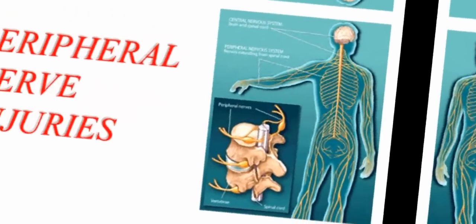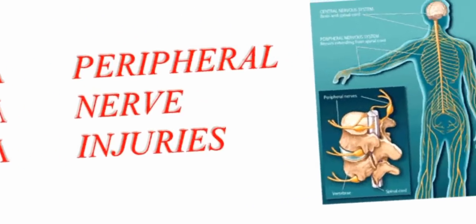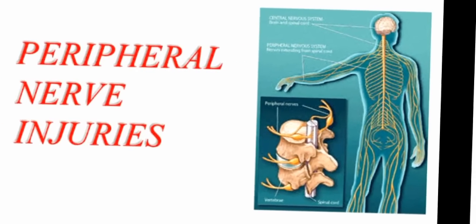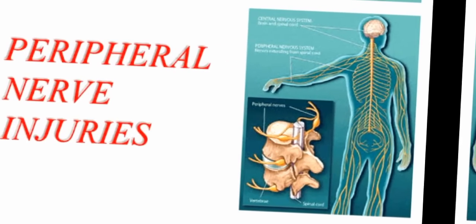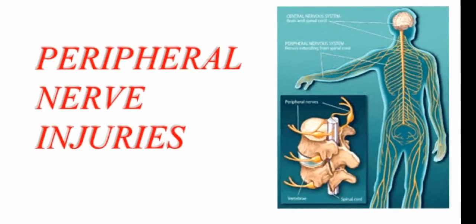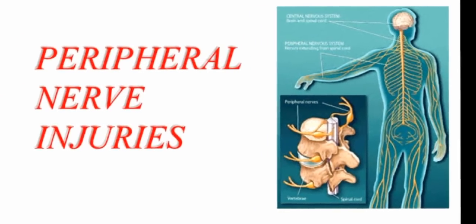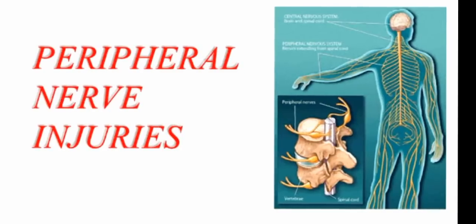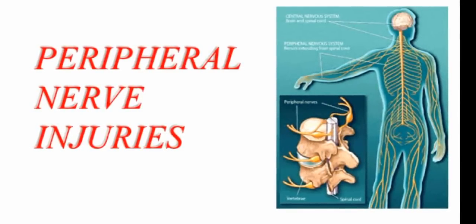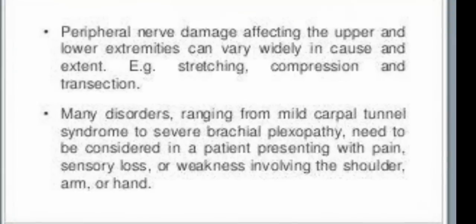Our today's topic is peripheral nerve injuries, which is an orthopedic topic. In this video we will get to know what peripheral nerve injuries are, how they occur, what are the types and classification, and so many things. Let's start with the introduction and definition.